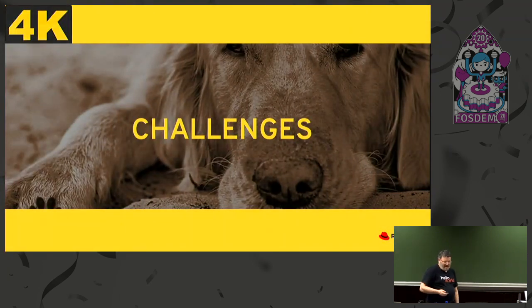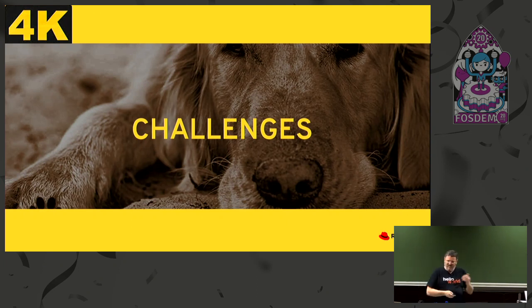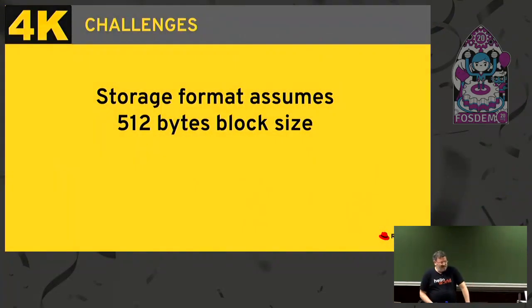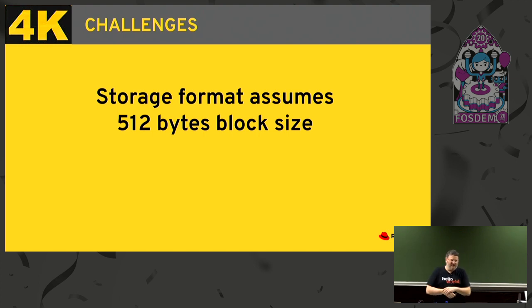So what are the challenges? When VDSM and oVirt were created more than 10 years ago, 4K block support was not important. Trying to modify the old system is pretty bumpy. The first trivial issue is that oVirt's storage format assumes the block size is 512. We assumed we can access volume metadata from any host and read and write 512 bytes to some offset in storage, and this does not really work on 4K storage when you can only write complete blocks unless you have complicated locking.